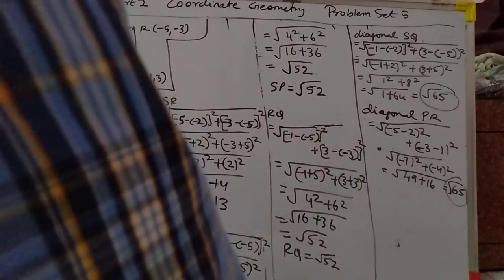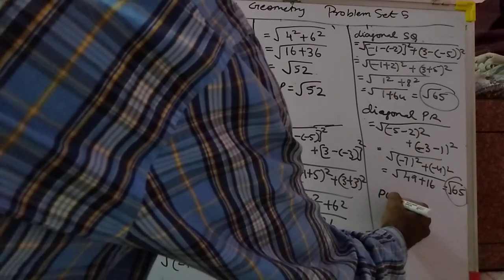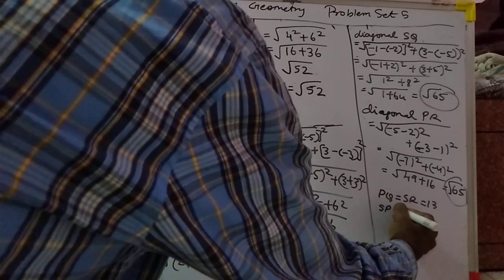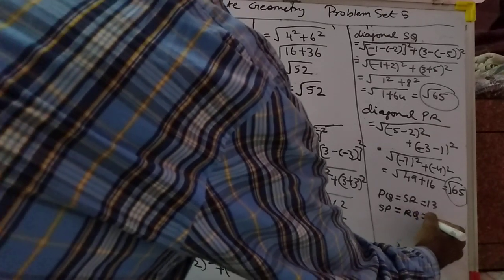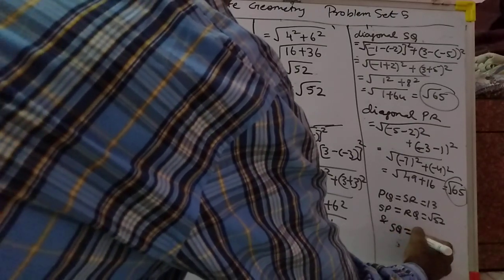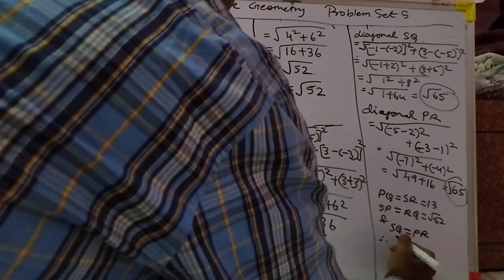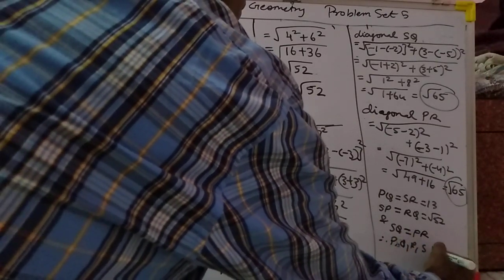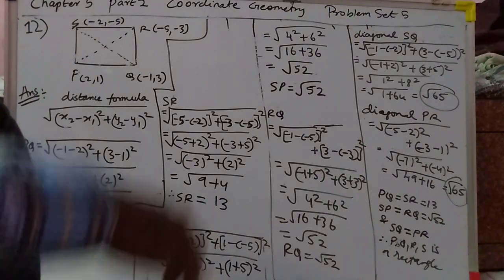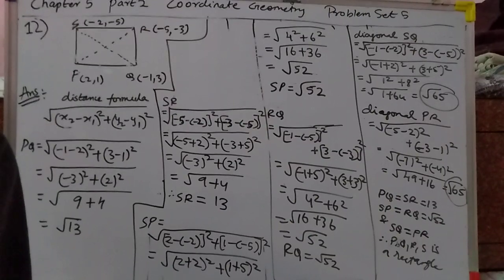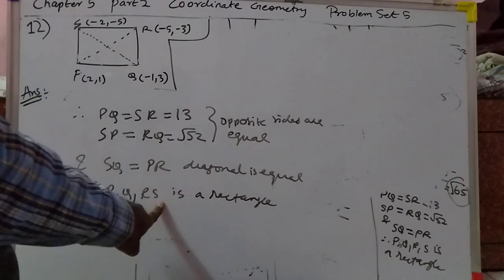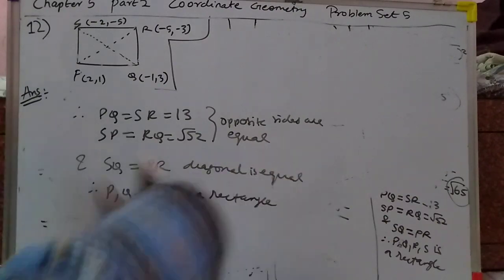So opposite sides are equal. It is a rectangle — only this much you have to write. Opposite sides equal, diagonals equal — therefore PQRF is a rectangle. That is all you have to state. I hope you got this. Next we do the 13th problem.